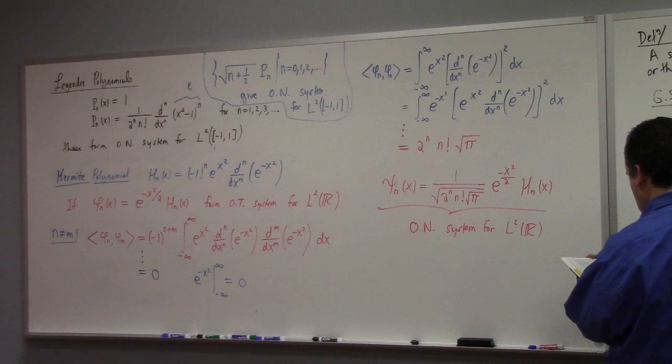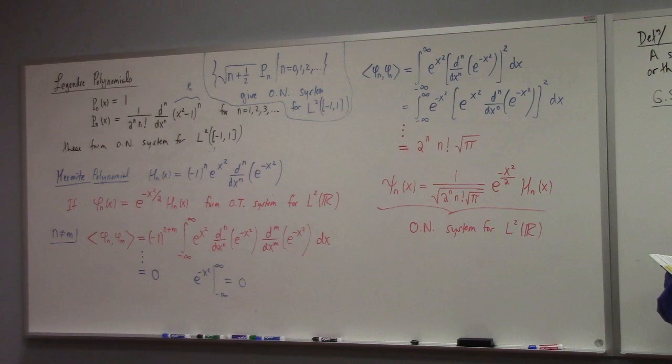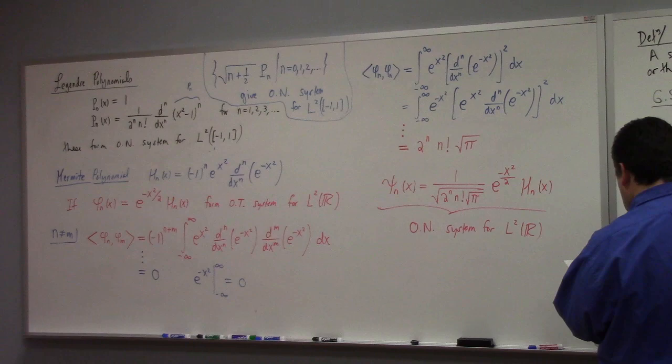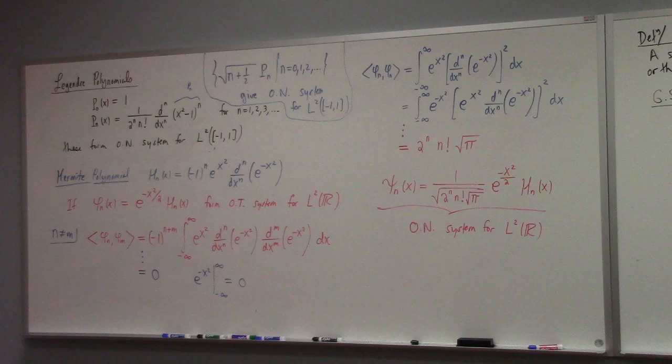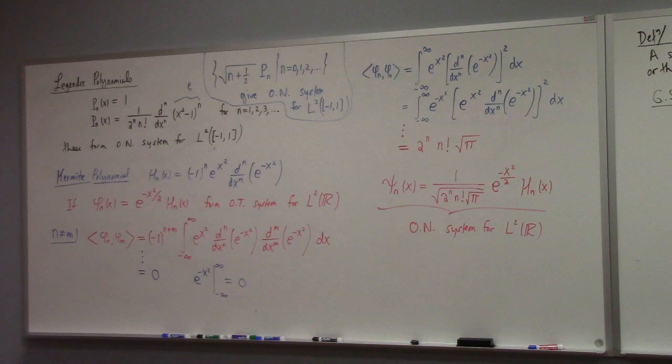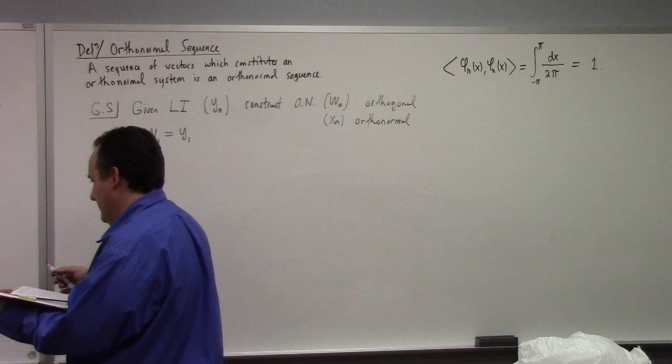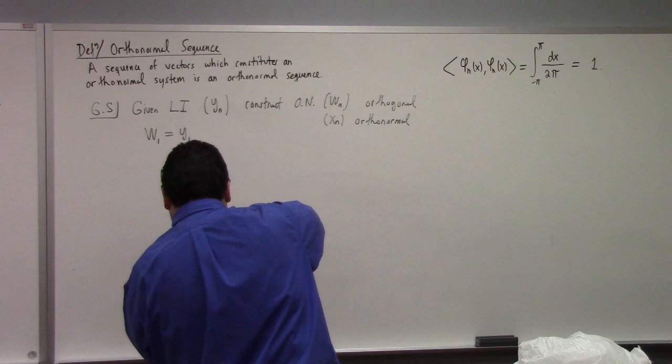You're given linearly independent set y_n, right? Then you can construct orthonormal system W_n by W_1 equals Y_1, and then, well, orthogonal. And I guess he's using X_n for orthonormal. Sorry, Audrick, we were... You haven't missed much. I'm following the line for the same problem. Okay, cool. I'll only do it. Cool.